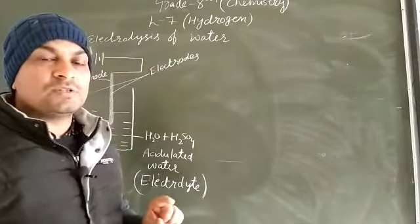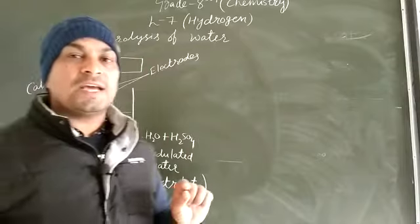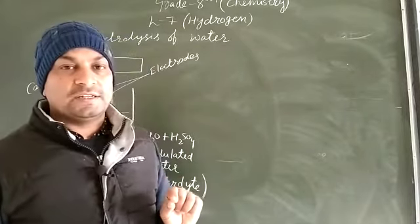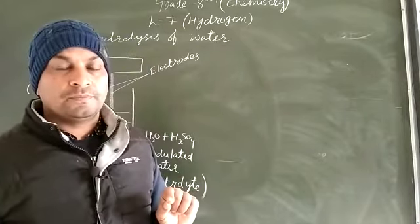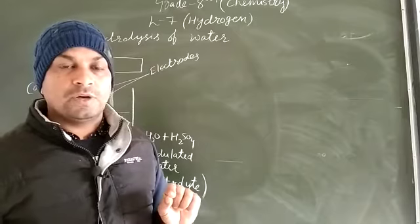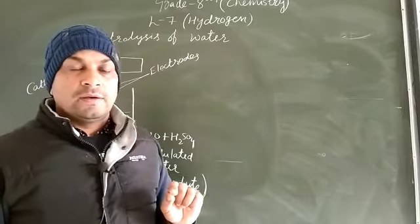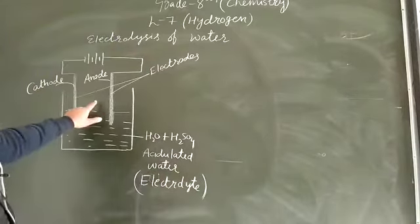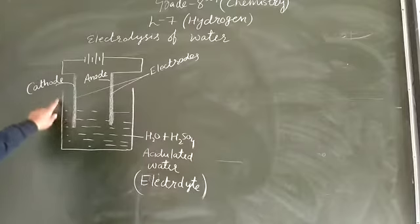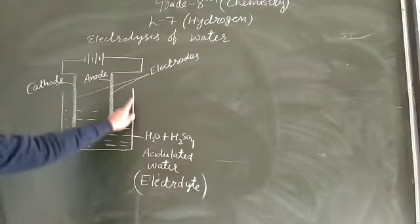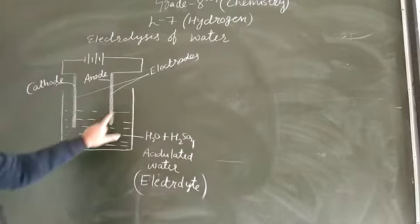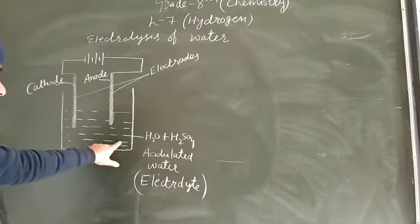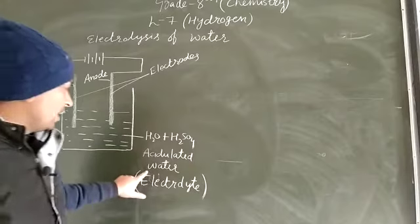Electrolysis means the breaking down of something with the help of electricity. Now in this apparatus you will see one container, and I have taken here acidulated water.